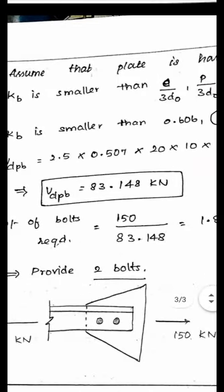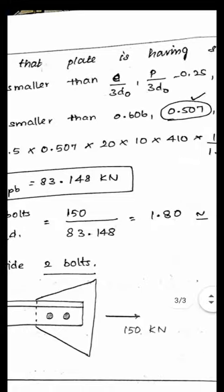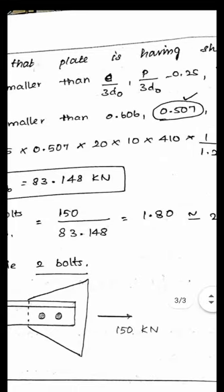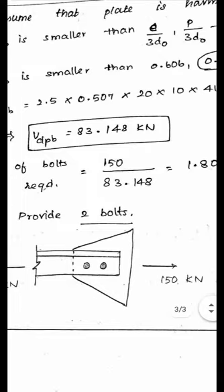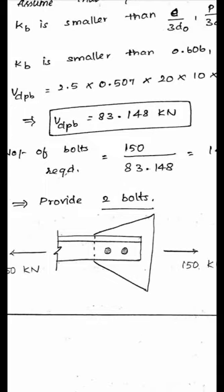Number of bolts required = 150 / 83.148 = 1.8. Rounding up to the nearest whole number gives 2. Therefore, provide 2 numbers of 8.8 grade, 20 mm diameter HSFG bolts to join the angle section to the gusset plate. Design is complete.